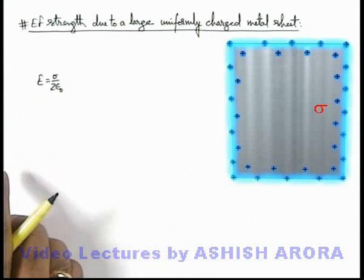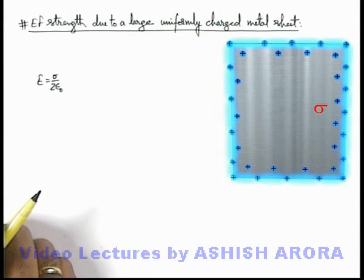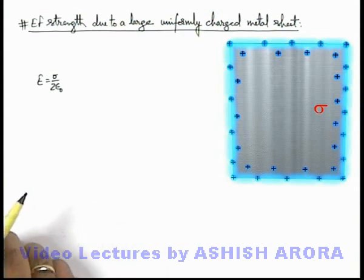But specifically in the case of metal, we already studied that when some charge is supplied to the metal, it will be automatically distributed due to mutual repulsion on the outer surfaces of the metal.